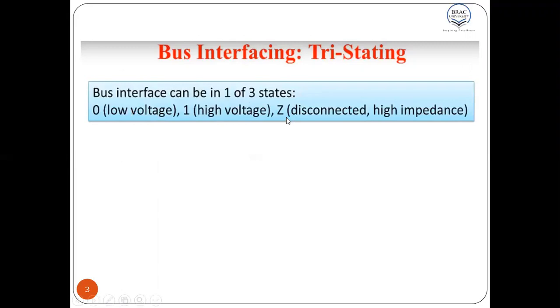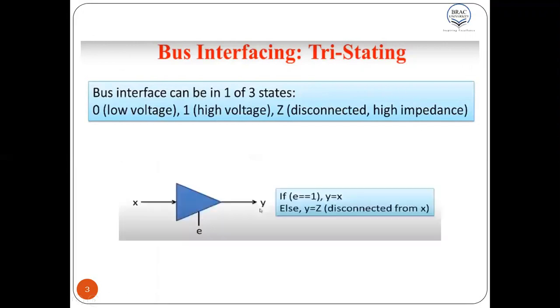And we have another third stage that is represented by Z, and that means disconnected or high impedance state. So in this disconnected or high impedance state, as if the I.O. device is disconnected from the bus.